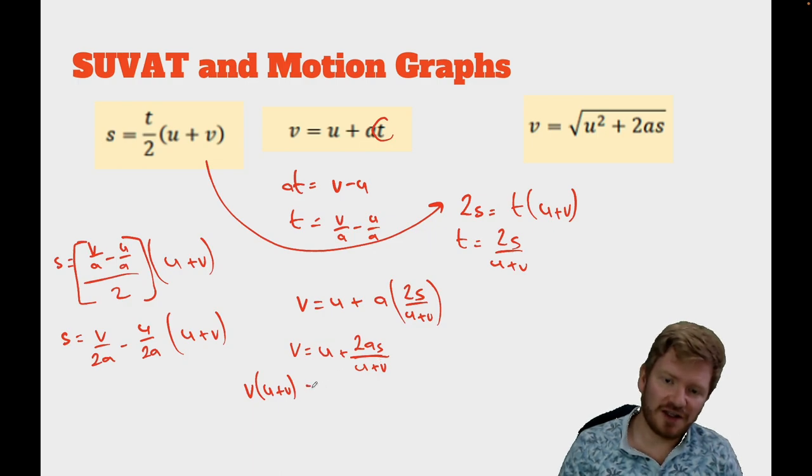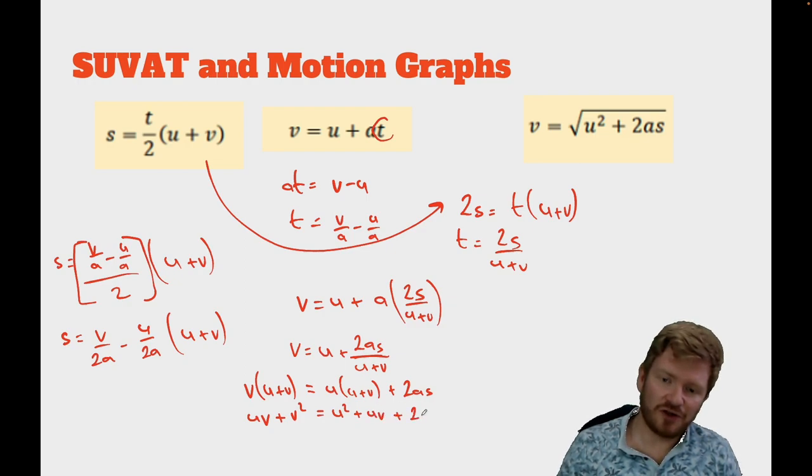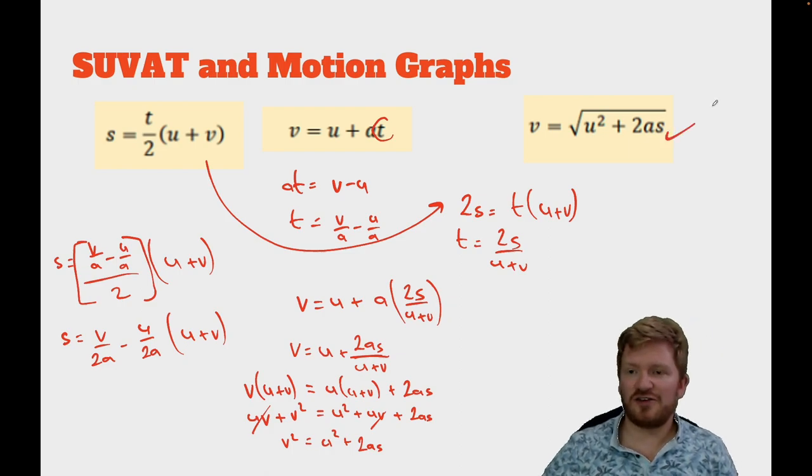So, what you should be able to do now is prove that this equation is this equation. We could try this. I could say v lots of u plus v. If I multiply both sides by u plus v, that will be equal to u lots of u plus v plus 2as. Is that any help? Potentially. I think this is going to get it to us. Okay, so now I can multiply out the brackets. So, that will be uv plus v squared is equal to u squared plus uv plus 2as. Here we go. So, I subtract uv from both sides. That kills that off. So, that gives me v squared is equal to u squared plus 2as. Square root both sides. Whew! And I get to there.